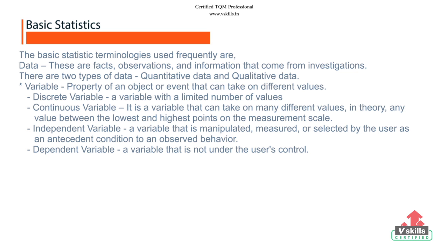Variable. Property of an object or event that can take on different values. Variable can be of following types. Discrete variable: A variable with a limited number of values. Continuous variable: It is a variable that can take on many different values, in theory, any value between the lowest and highest point on measurement scale.